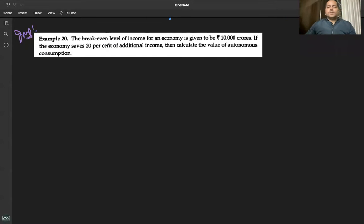Example 20: The break-even level of income for an economy is given to be 10,000 crores. If the economy saves 20% of additional income, then calculate the value of autonomous consumption.